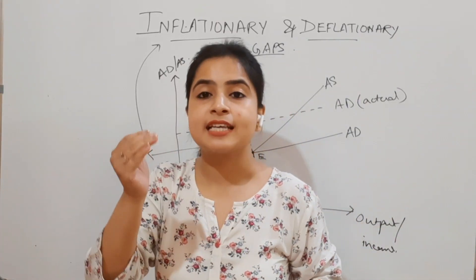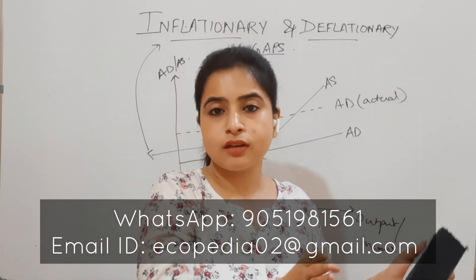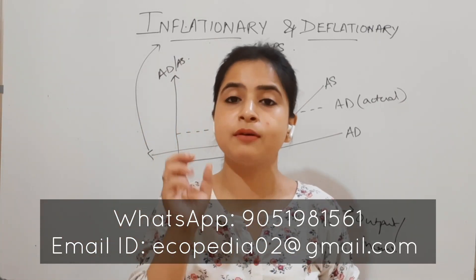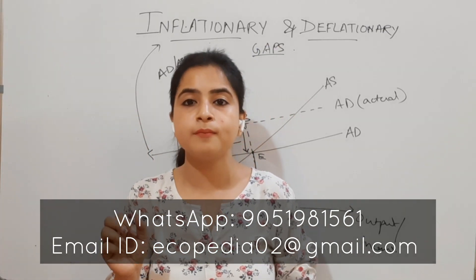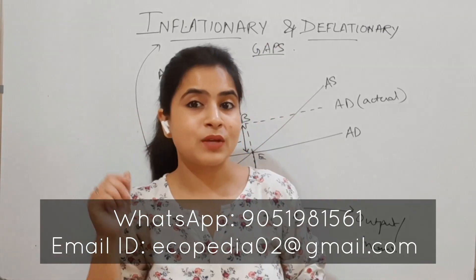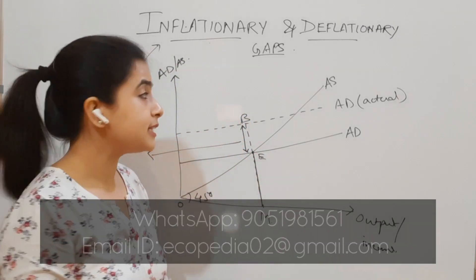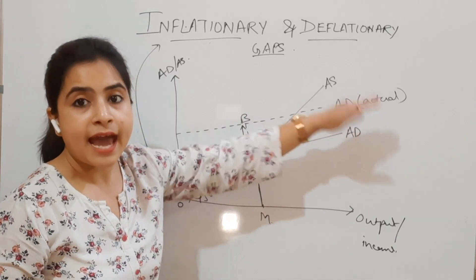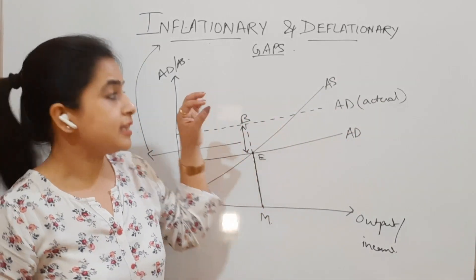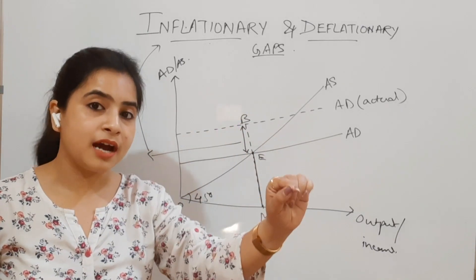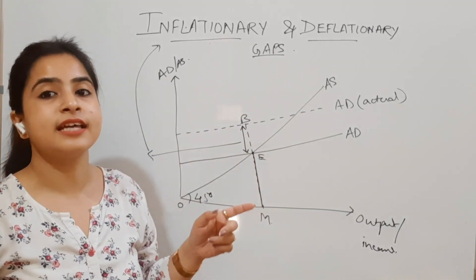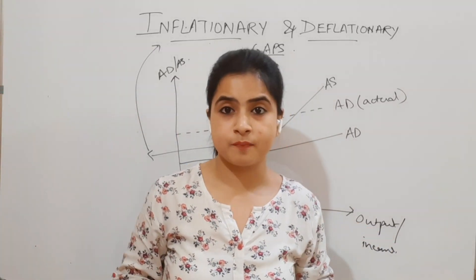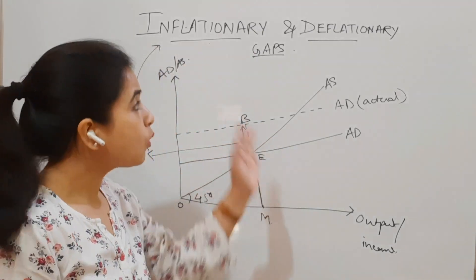Coming back to the basics of economics — if there is an excess of demand, what will happen? How will the economy find equilibrium? Very simply, prices will keep on rising. Since there is an excess in the actual demand curve and supply is short, to meet the demand the prices will go up, and there will be a new, higher level of equilibrium where prices are higher.